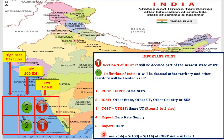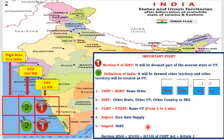Here you can see some definitions: Section 2, subsection 56 of the CGST Act gives India's definition; Section 2, subsection 103 gives the state's definition; and Section 2, subsection 114 gives the UT's definition. Now the question is, how many kilometers are in 1 nautical mile? Around 1.852 kilometers.